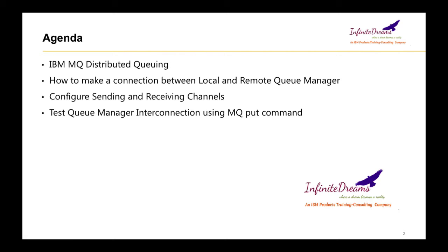We are going to have two different systems. In one system I will install a queue manager; in another system we will install another queue manager, and we will have local and remote queues in both systems. We will make a configuration which will enable sending a message from one system to another. This concept is called Distributed Queuing, and at the end we are going to test this configuration.